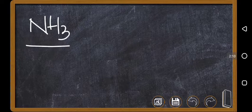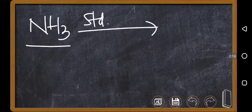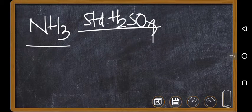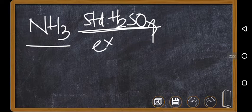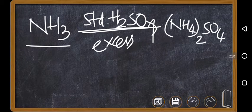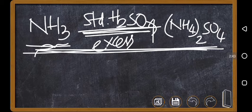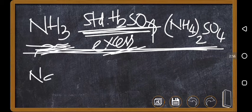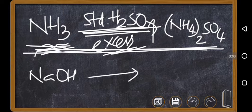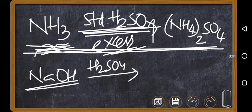The ammonia released is then treated with a standard H₂SO₄ solution — 'standard' meaning concentration is known. We use excess H₂SO₄ because the reaction is: NH₃ + H₂SO₄ → (NH₄)₂SO₄, a neutralization reaction. Since we don't know the exact amount of NH₃, we don't know how much H₂SO₄ will be consumed. The remaining excess H₂SO₄ is then calculated by neutralizing it with NaOH: H₂SO₄ + 2NaOH → Na₂SO₄ + H₂O.